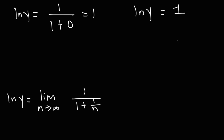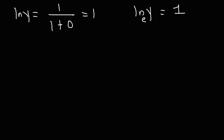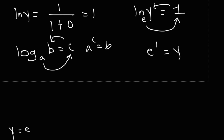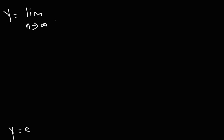The base of a natural log function is e, which is important for getting our answer. Using the log property: if log base a of b equals c, then a raised to the c equals b. Applying this, since ln y equals 1, we have e raised to the first power equals 1, so y equals e. Going back to the original problem, y was equal to the limit as n goes to infinity of 1 plus 1 over n raised to the n — and since y equals e, this limit equals e.